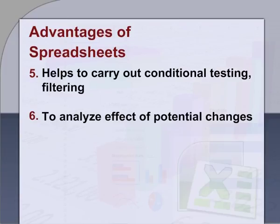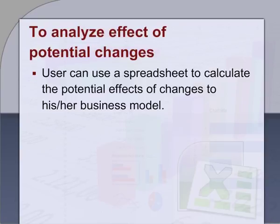Sixth, to analyze the effect of potential changes: a user can use a spreadsheet to calculate the potential effects of changes to his or her business model. For example, if the user uses existing information together with a potential change such as sales fluctuation in a retail context, one can determine the impact of this change.